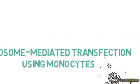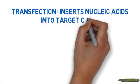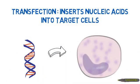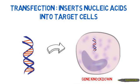Before I do that, I will briefly explain the principles of this experiment. Transfection is a process of inserting nucleic acids into target eukaryotic cells. This technique is commonly used to knock down a certain gene in the target cell.